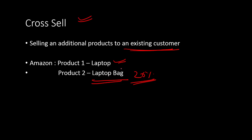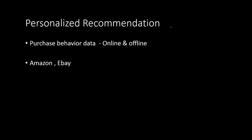The third type is a personalized recommendation, or what people call a recommendation engine, which can also be applied in the retail industry. You have tons of data from both online and offline purchases — the customer behavioral and purchase behavior data — and you use that data to recommend products and services to your customers. E-commerce giants like Amazon, eBay, or Alibaba analyze data you produce just by browsing their websites or apps, and recommend products with a higher chance of conversion.